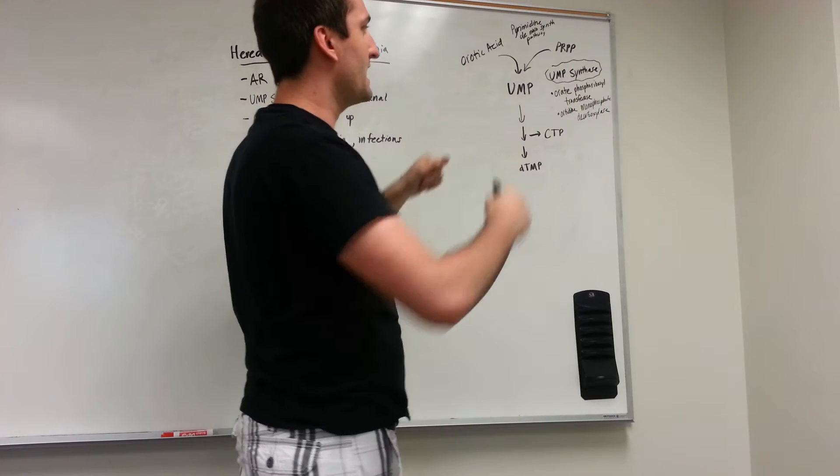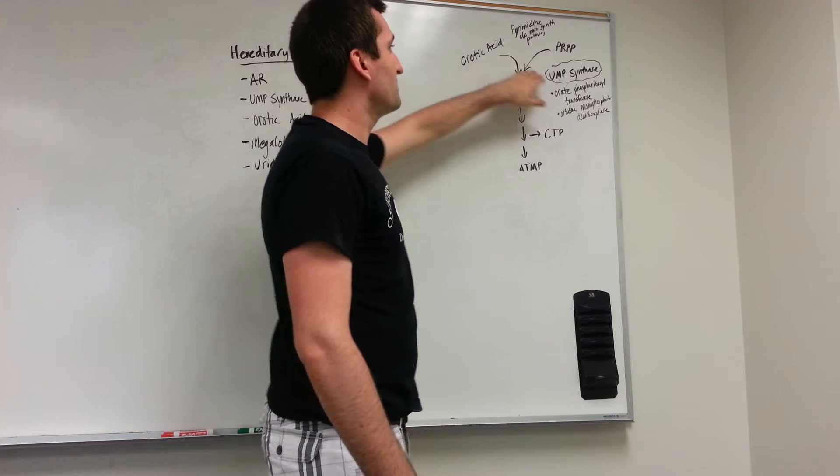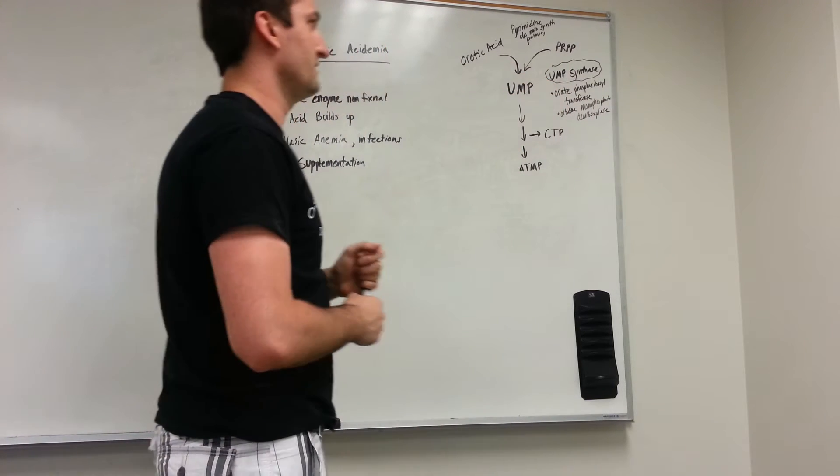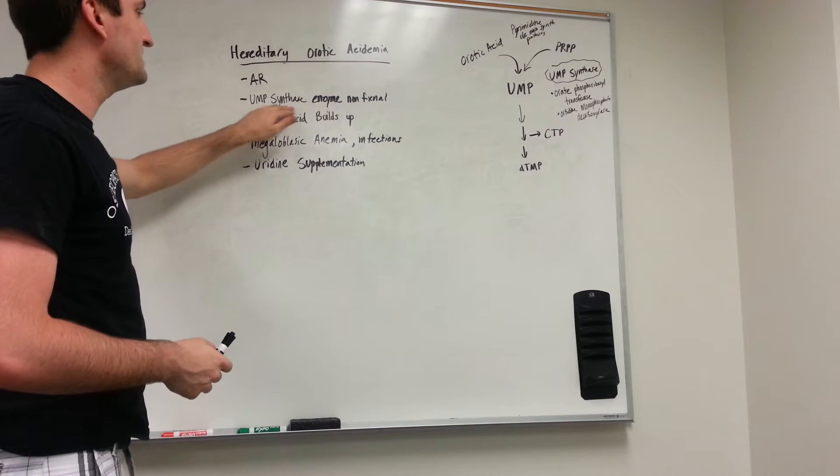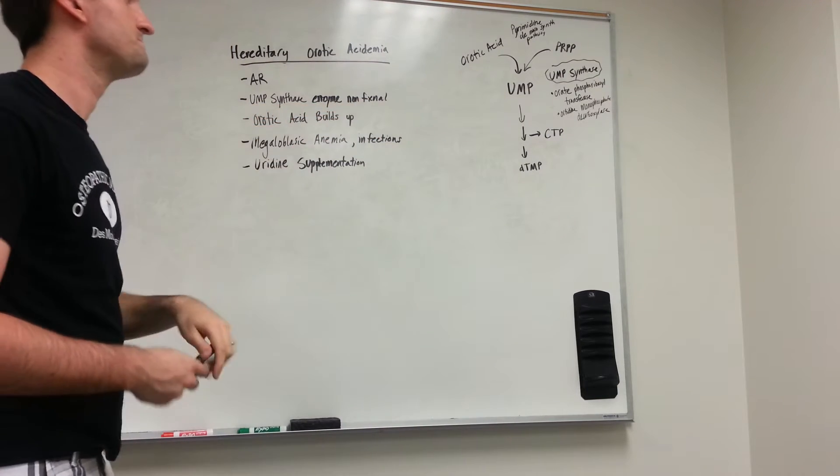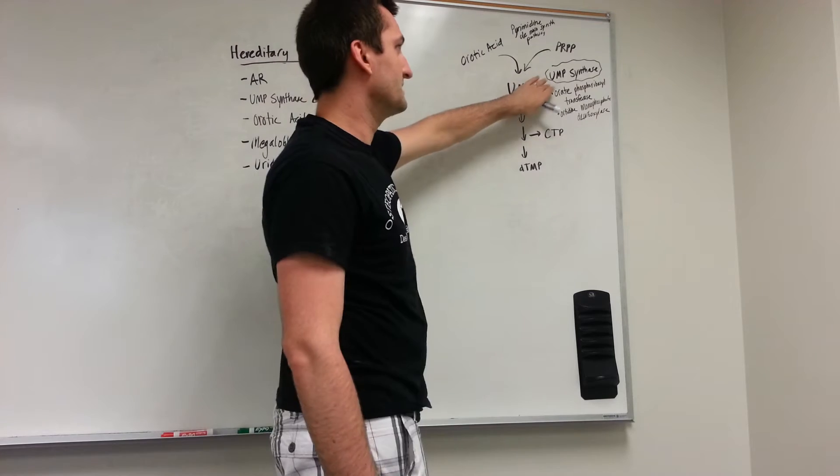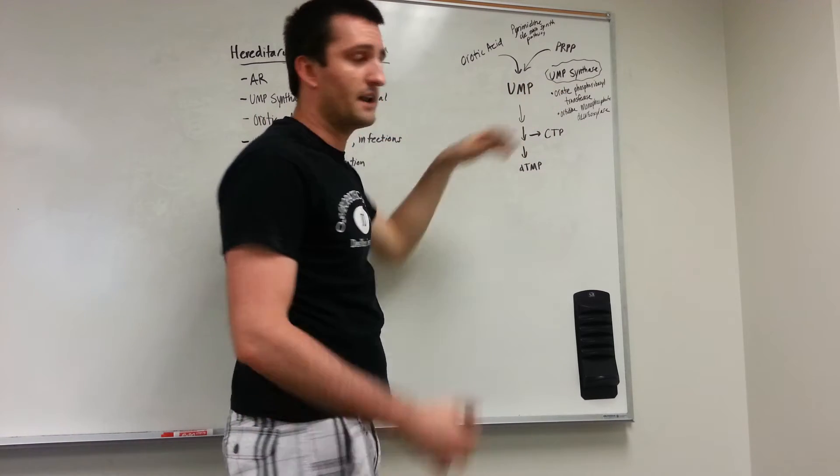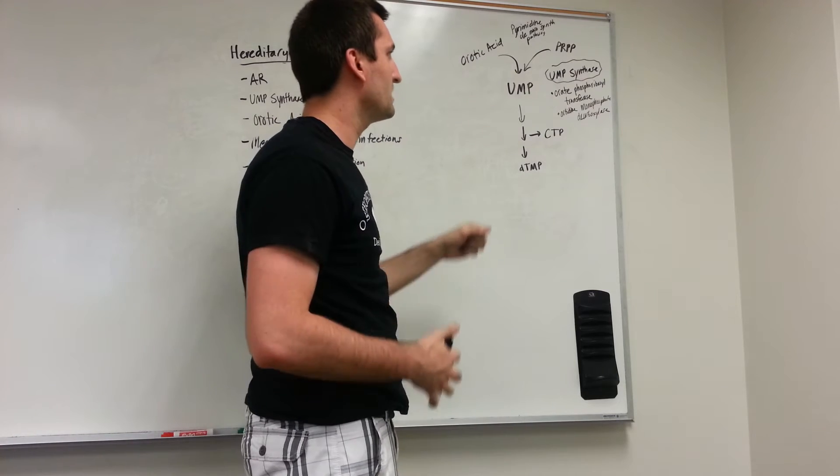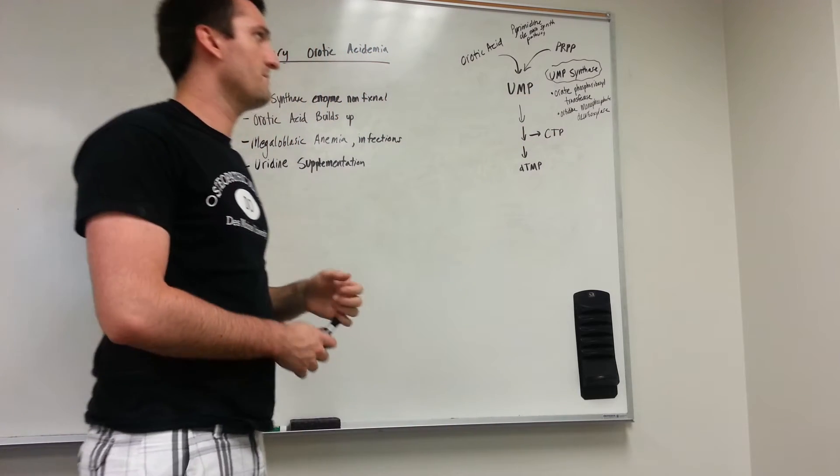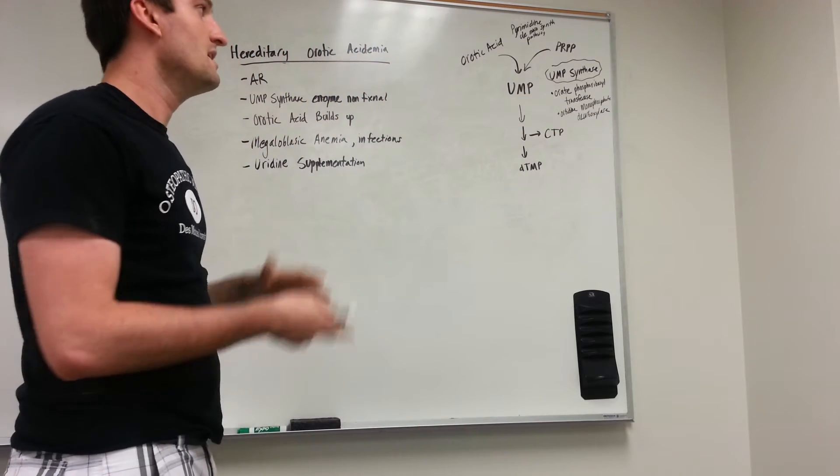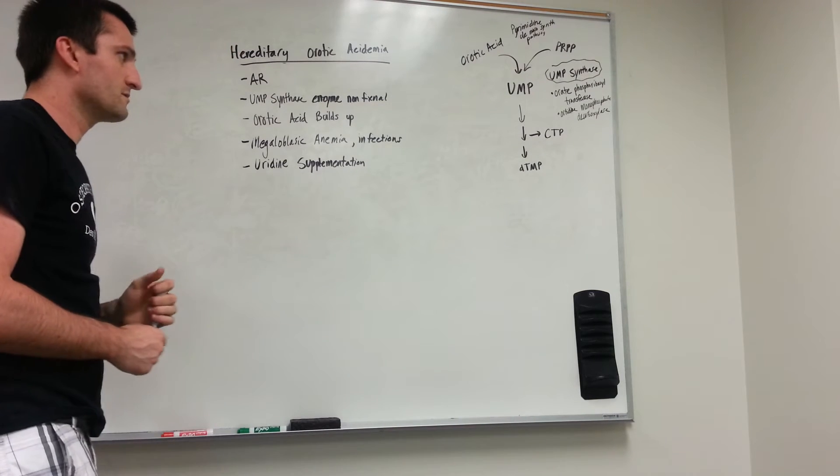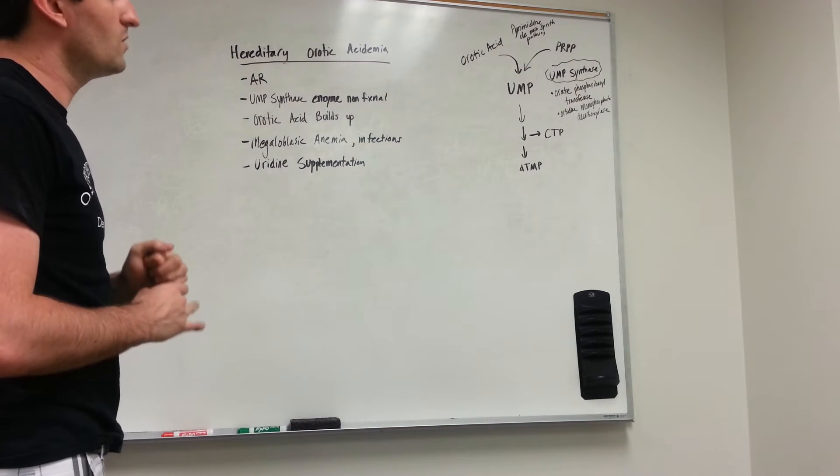How does that happen? We get two reactants, one product, that is mediated by UMP synthase. Look over here—UMP synthase enzyme is non-functional. It's actually made up of two separate enzymes into one complex: the orate phosphoribosyl transferase enzyme and the orotidine monophosphate decarboxylase enzyme. If either one of those is absent, you're not going to be able to create UMP.